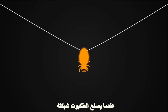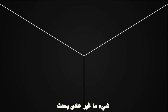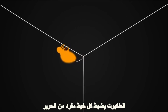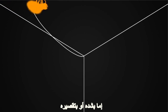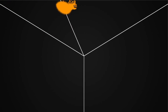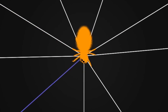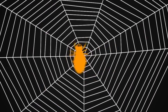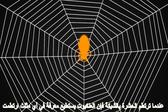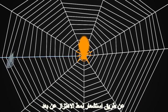When a spider builds its web, something extraordinary happens. The spider tunes individual strands of silk by stretching or shortening them. Each strand vibrates at a different frequency. When a bug hits the web, the spider can triangulate where it is by sensing the pattern of the vibrations.